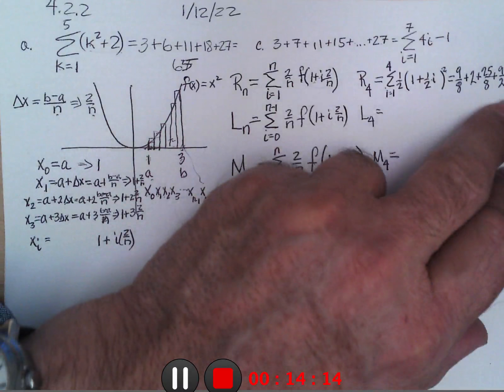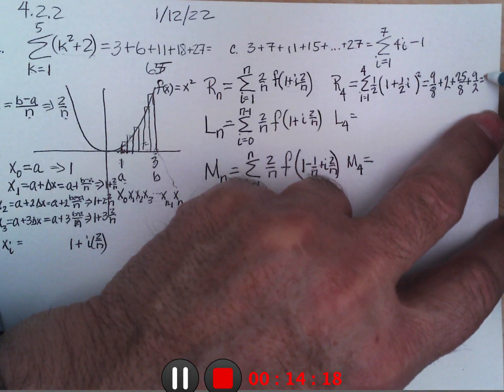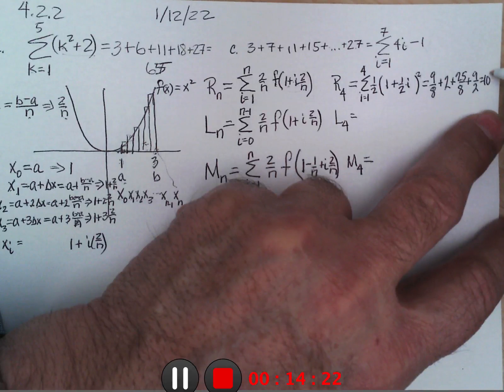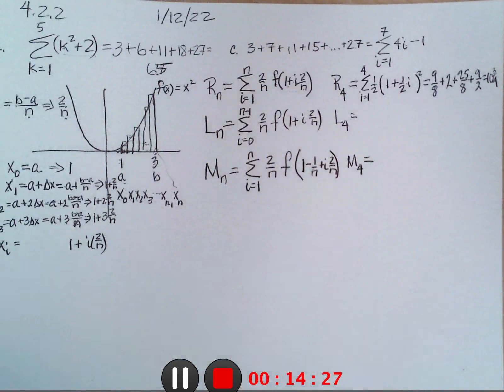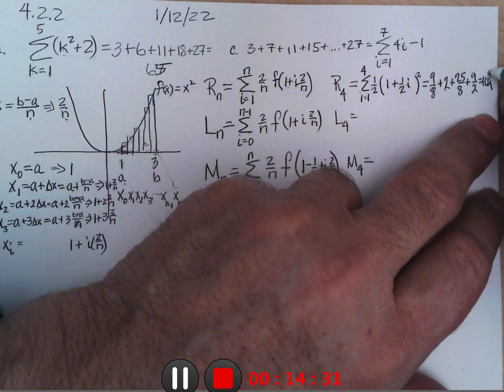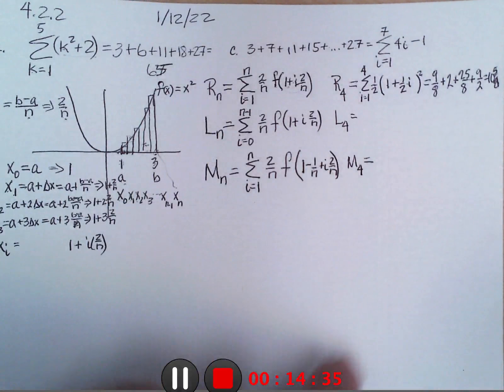And I think if you work that out you get 10 and 3 quarters, trying to remember what we got in class, something like that. No, 10 and 5 eighths maybe it was. I can't remember, something, 10 and something.